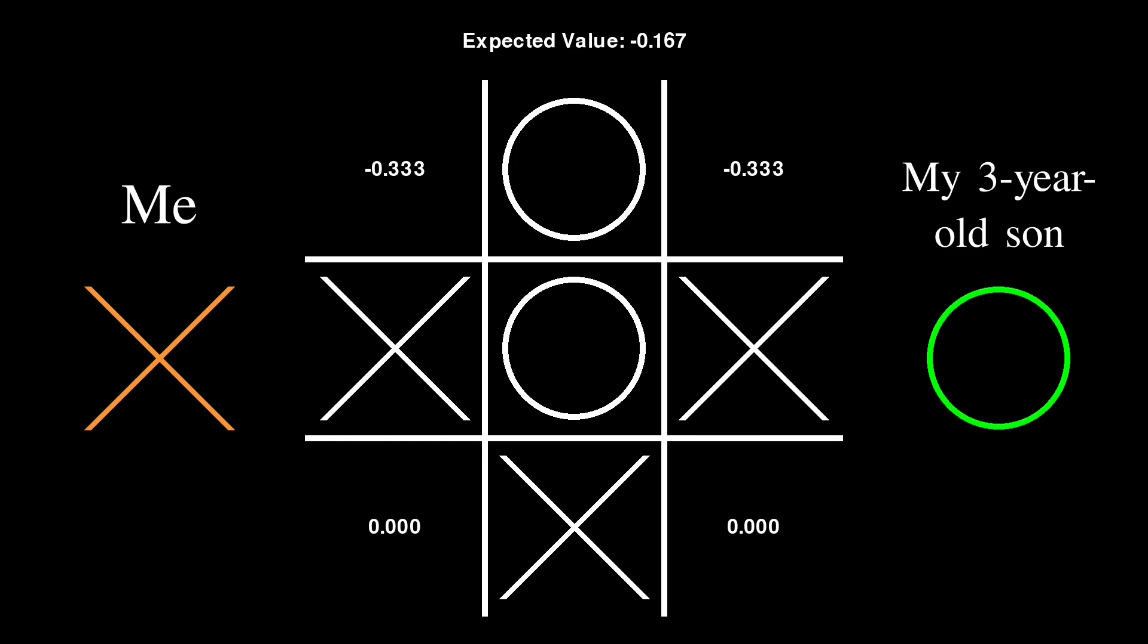At this point, to my delight, my son chose the upper right corner. A fork. I, of course, blocked one of his winning moves, but he saw the other one and won.